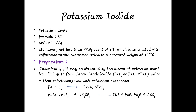Next, two compounds are discussed in this chapter: ammonium chloride and potassium iodide. Ammonium chloride is already discussed in the chapter on gastrointestinal agents and acidifiers. The next compound is potassium iodide, with molecular formula KI and molecular weight 166 grams per mole.